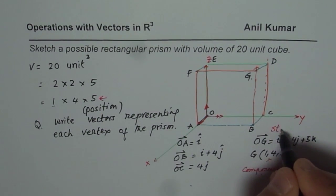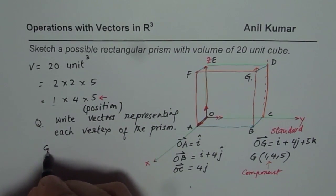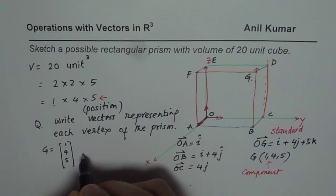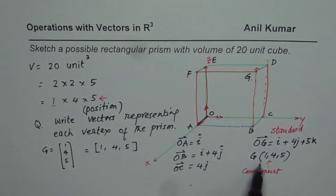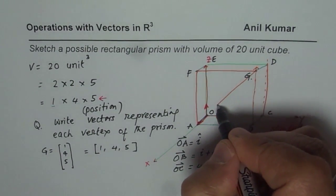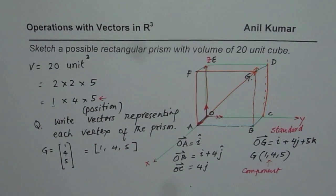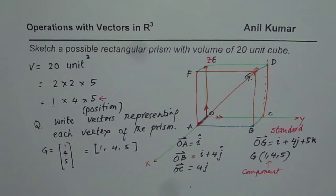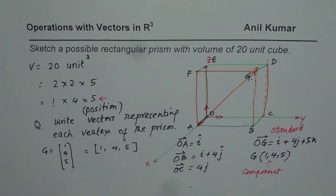The other representation is the standard form. I could also represent G as a column matrix: 1, 4, 5. All these represent the same vector. If I sketch a vector with tail at the origin and head at G, that gives me vector OG. So to sketch a position vector OG, you may need to sketch a rectangular prism as we did here.